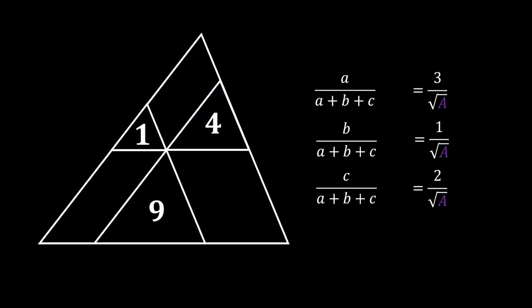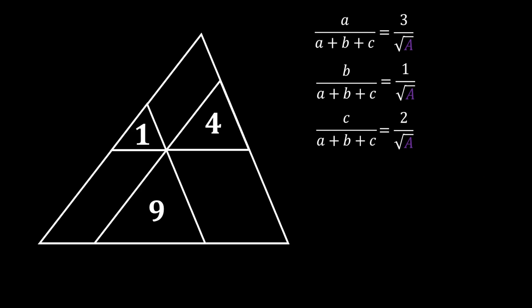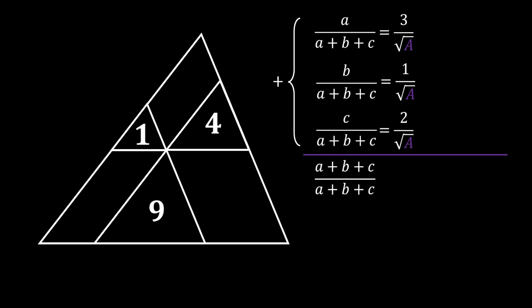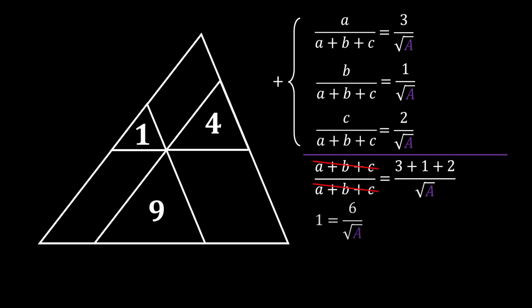Now we have formed three equations, and all we need to do is add those three equations together. By doing this we get that (a + b + c) over (a + b + c) is equal to (3 + 1 + 2) over the square root of the area of the big triangle. Of course we can simplify this, and from here we can conclude that the square root of the area of the big triangle is equal to 6.